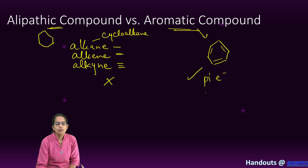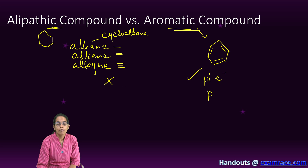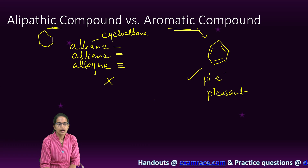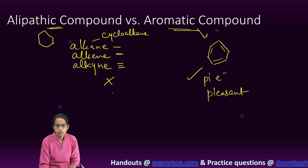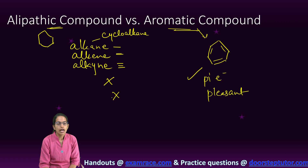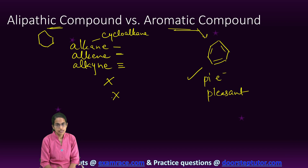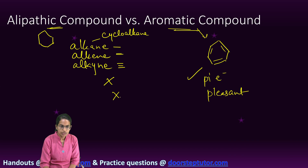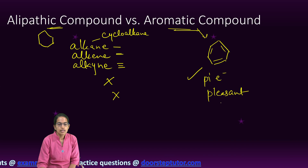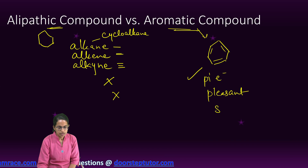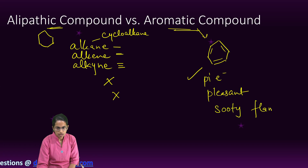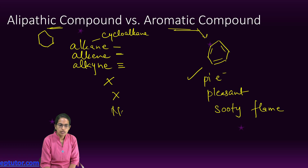Aromatic compounds have a pleasant smell; however, aliphatic compounds do not have a pleasant smell. Another important difference: in aromatic compounds the flame is sooty, whereas in aliphatic compounds it is not a sooty flame.